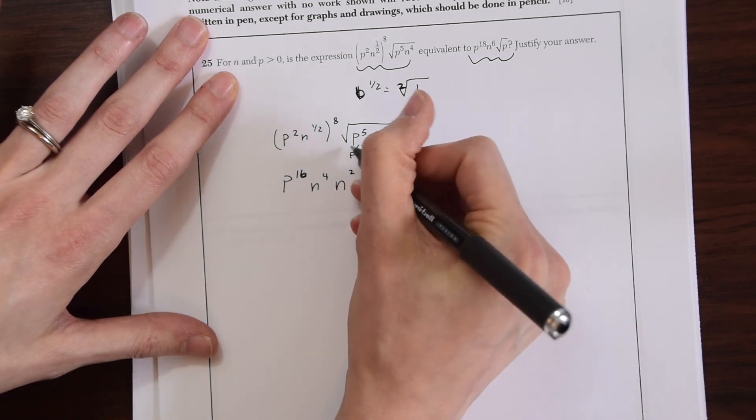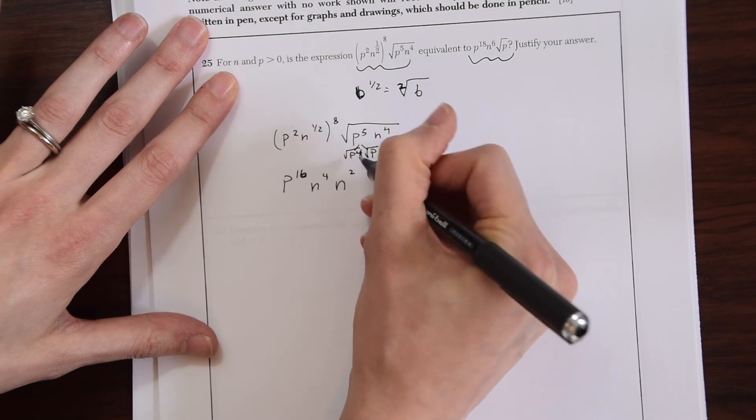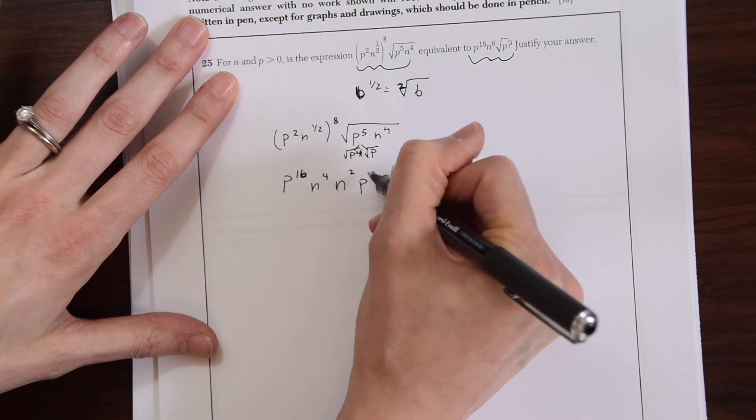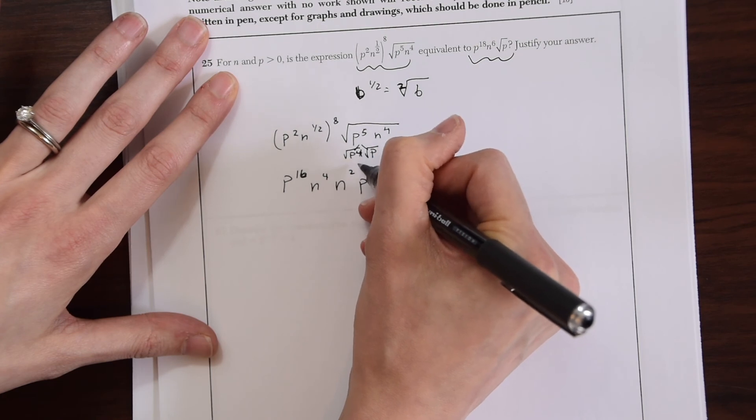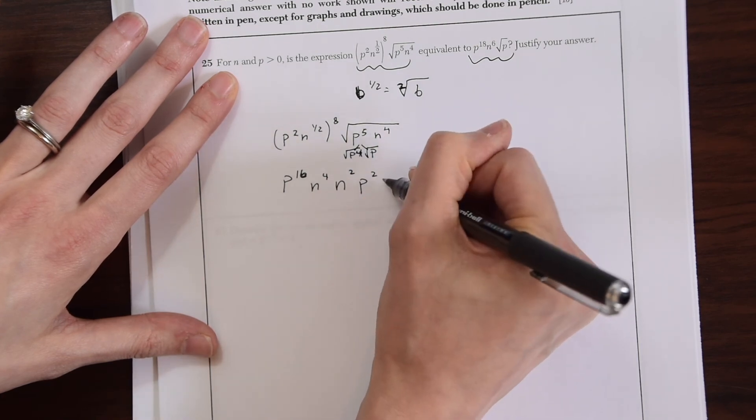When we do that because p to the fourth times p will give you p to the fifth, that's why we can do that. But if we take the radical of each we're left with p to the second, p to the fourth radical. P to the fourth gives us p squared and radical p.